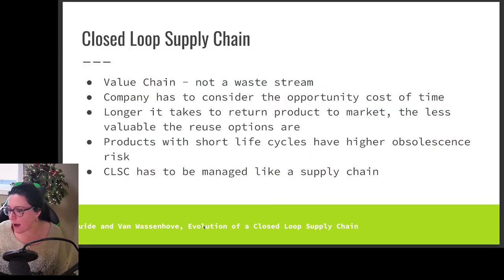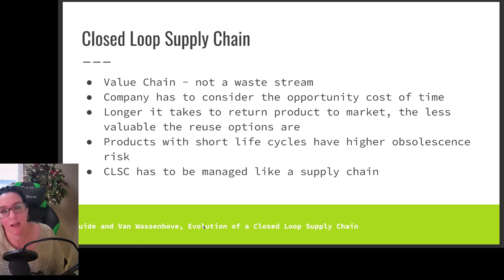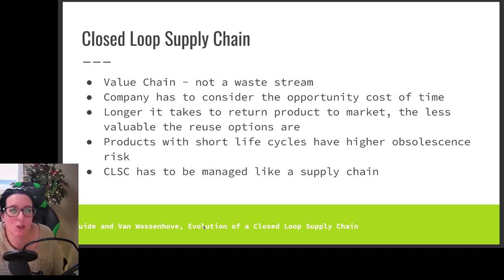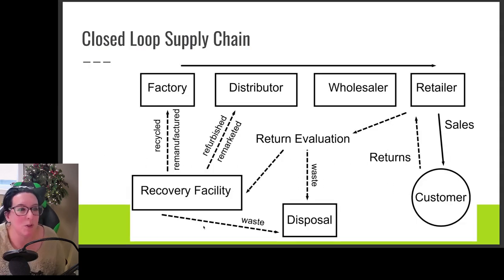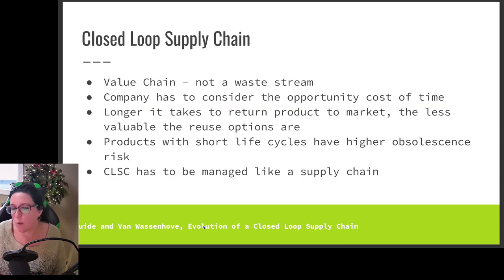When we look at the supply chain, we need to recognize that it is a value chain, not just a waste stream. Instead of the customer throwing it in the garbage, we give it back to a different company — but that means reverse logistics have to be profitable. For companies to do them, it has to make money. We need to consider the opportunity cost of time: how long does it take to assess the returns and get them to a point where they can be put into a new product, refurbished, or remarketed — creating value for the customer and profit for the organization. Companies are only going to do it if it can be done timely and is profitable.